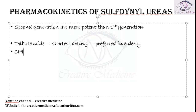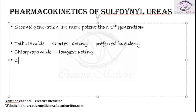Then we have chlorpropamide, and this chlorpropamide is the longest acting sulfonylurea. Then we have glimepiride, which is the most potent sulfonylurea.